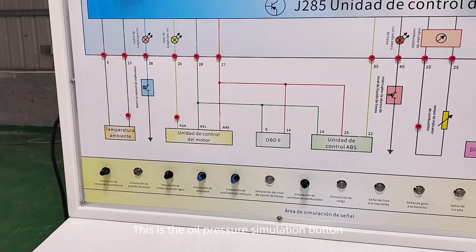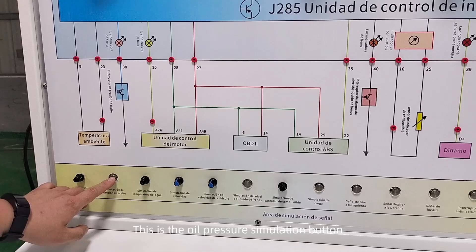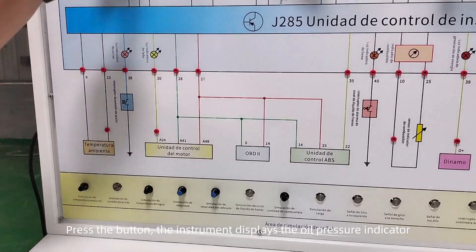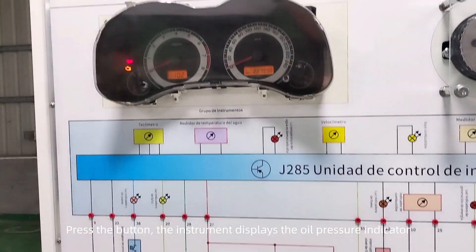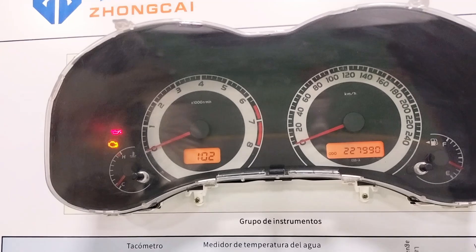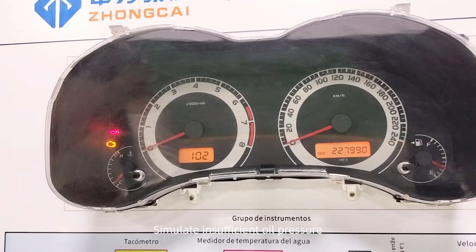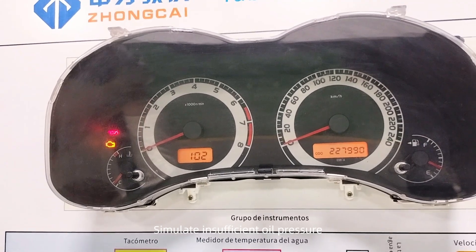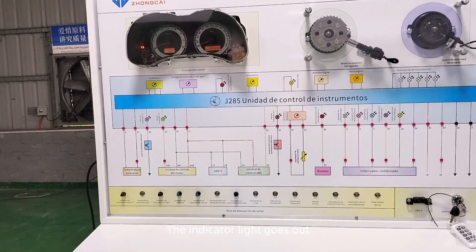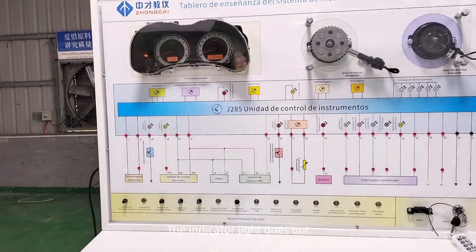This is the oil pressure simulation button. Press the button — the instrument displays the oil pressure indicator. Simulate insufficient oil pressure, then turn off the button. The indicator light goes out.